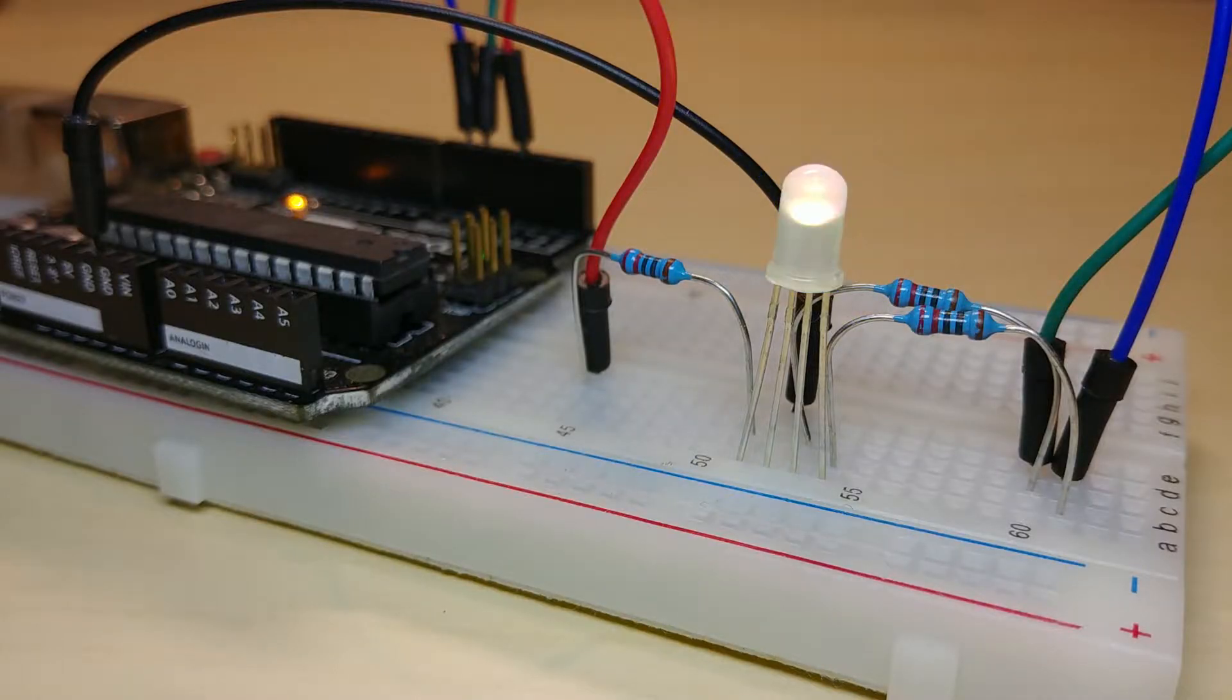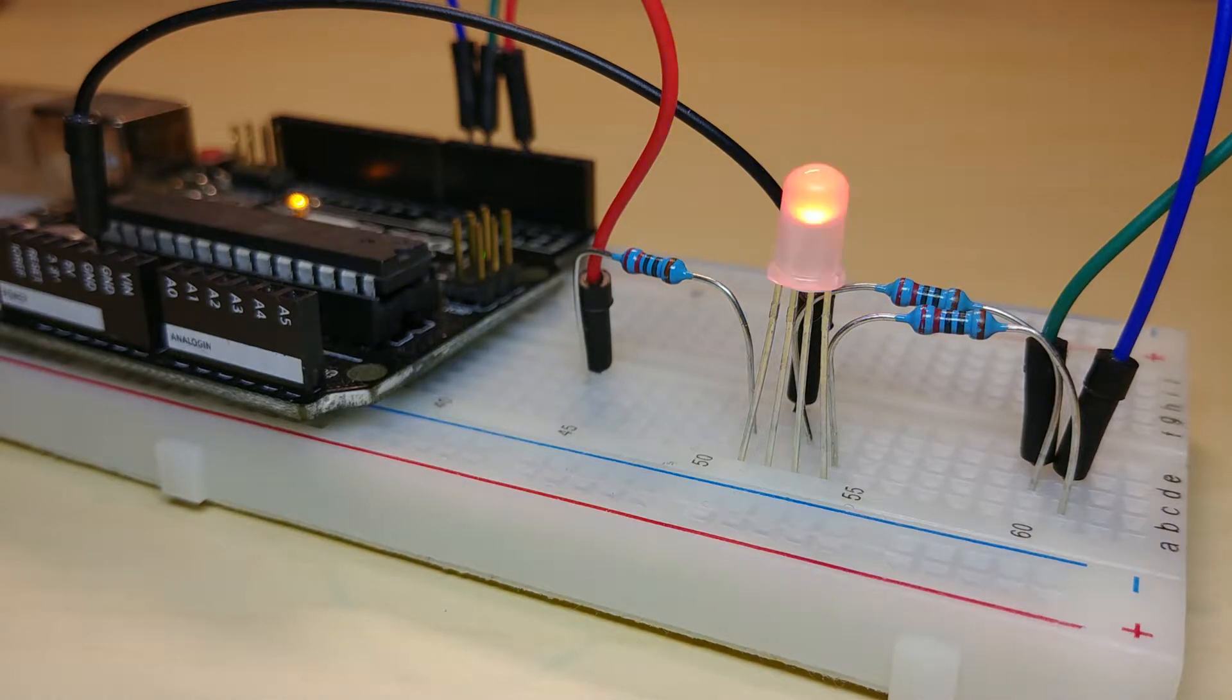We can interact with this LED the same way as we did with the simple ones but now we can also mix the colors. I said we are going to adjust the brightness but that would require voltages between 5 and 0 volts right? Our Arduino is a digital device and it can not produce any analog voltages but it can imitate them by switching between high and low in a smart way.